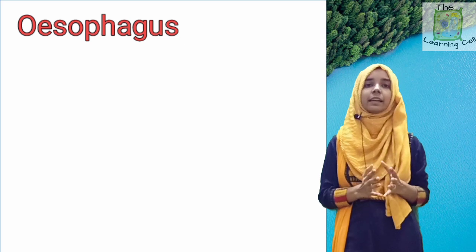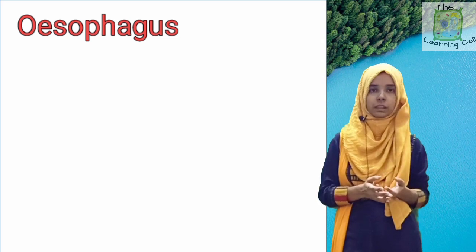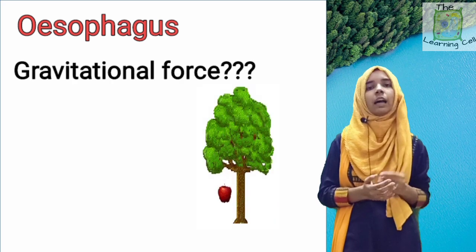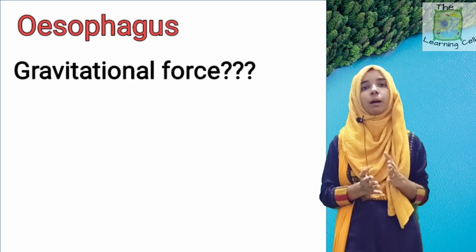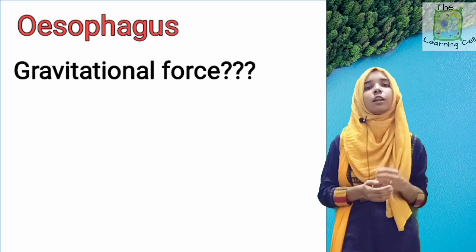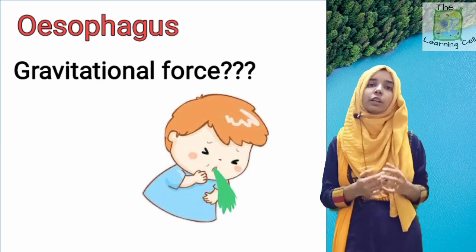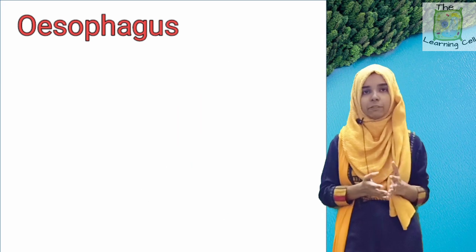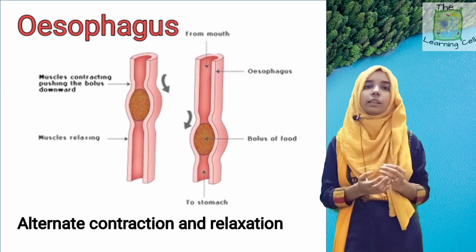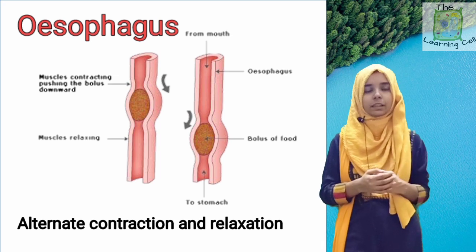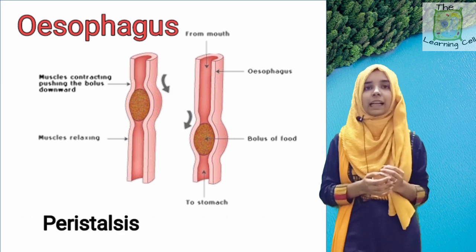The question arises: how does food move in the downward direction through the gut? Is it due to gravitational force? If so, then how does food get digested when we are lying down, or how does food move in the opposite direction when we vomit? So the reason is not gravitational force, but rather the alternate contraction and relaxation of the muscles of the gut, which is known as peristalsis or peristaltic movement.